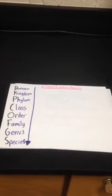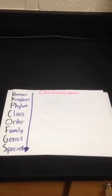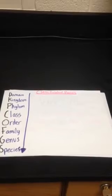The eight levels of classification are the domain, kingdom, phylum, class, order, family, genus, and species.